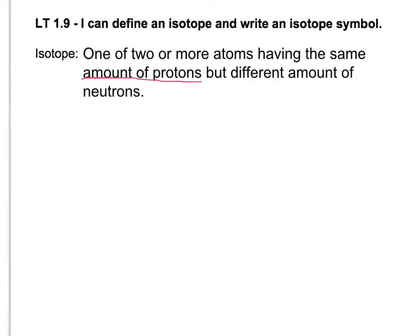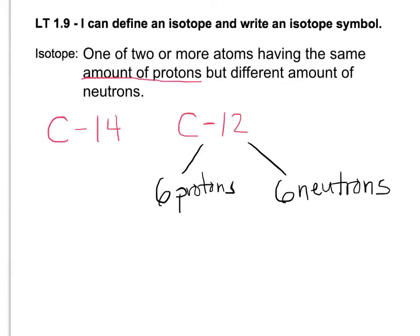So an example of this would be carbon-14 and carbon-12. These are two isotopes of each other. Carbon-12 has six protons, six neutrons. Carbon-14 also has six protons because we know it's carbon but it has eight.